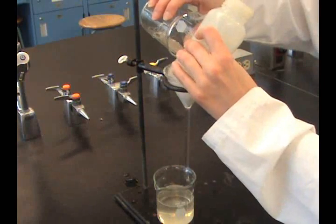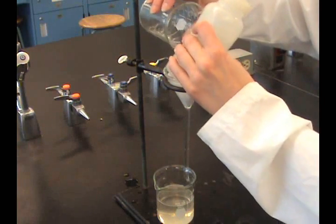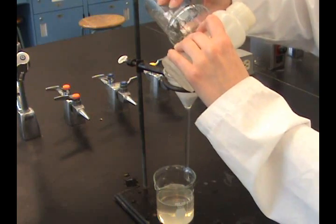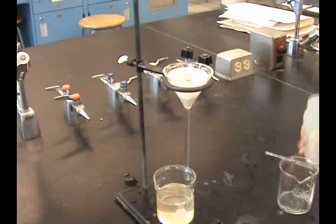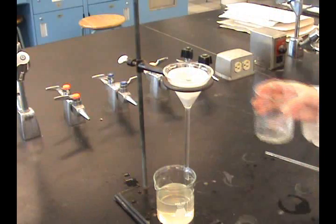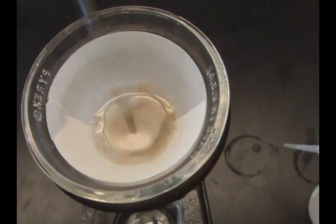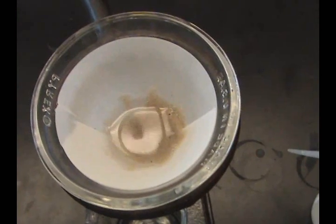Use a wash bottle to create a stream of liquid to transfer the solid left in the beaker. Wash the precipitate with several wash portions by adding water or solvent to the beaker, swirling and decanting into the funnel.